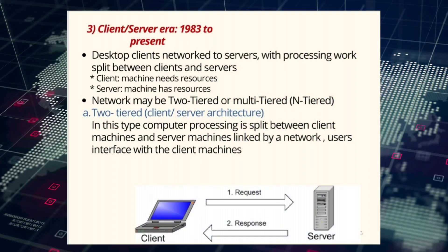Number three: client-server era, 1983 to present. Desktop clients are networked to servers with processing work split between clients and servers. Client machines need resources; server machines have resources. The network may be two-tiered or multi-tiered. In this type of computing, processing is split between client machines and server machines linked by a network, with the user interface on the client machines.